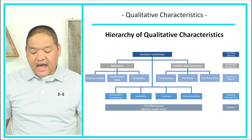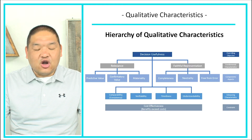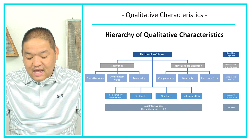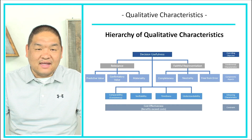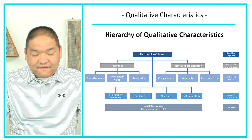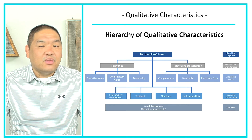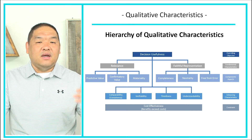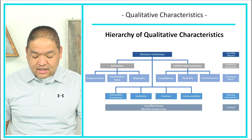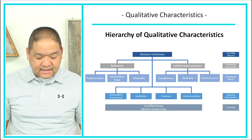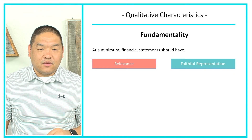We also have constraints. The overarching one is cost effectiveness — what is the benefit we're going to gain and what is the cost to obtain that gain? Our benefits must exceed the cost. There must be a situation in which the benefits received are more than what it costs to obtain that information. So at a minimum, financial statements should be relevant and have faithful representation.